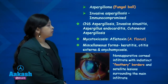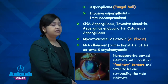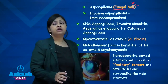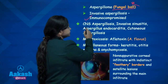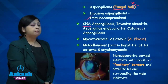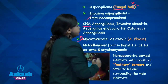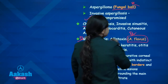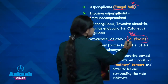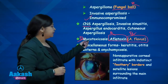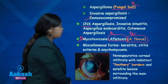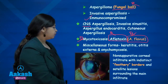Aspergilloma is also known as a fungal ball, and on chest X-ray you can see a ball-like structure. Invasive aspergillosis involves dissemination of infection and occurs in immunocompromised patients. Other manifestations include CNS involvement, invasive sinusitis, Aspergillus endocarditis, and cutaneous aspergillosis. Mycotoxicosis is due to the toxin aflatoxin produced by Aspergillus flavus, which occurs when Aspergillus flavus grows in maize or other grains. Miscellaneous forms include keratitis, otitis externa, and onychomycosis.